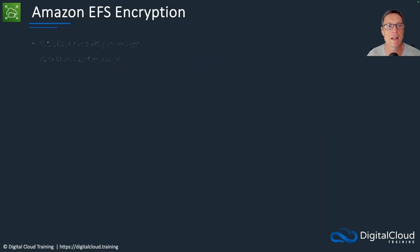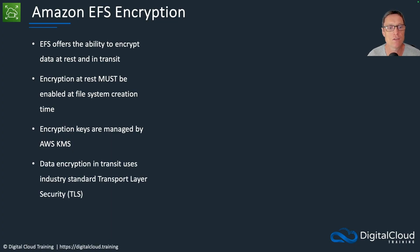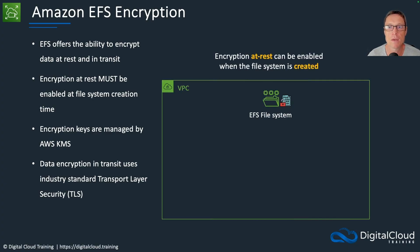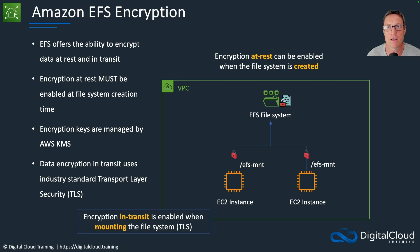Moving on to the Elastic File System — EFS offers the ability to encrypt data at rest and in transit. Encryption at rest must be enabled at file system creation time. The encryption keys are managed by AWS KMS. Data encryption in transit uses the industry standard TLS protocol. You can choose to enable encryption on the file system at creation time, and you can also enable encryption in transit using TLS.